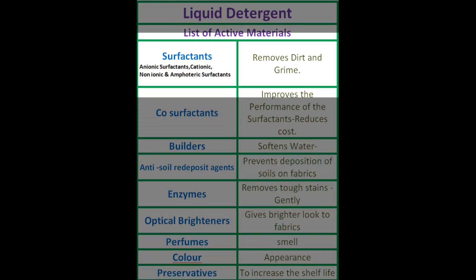Surfactants are the key materials in liquid detergent. They are the materials removing dirt and grime from clothes. Here we will discuss one important point. The dirt and grime may be due to any material, but in chemistry's point of view, it may be either a cationic material, an anionic material, or a neutral material.